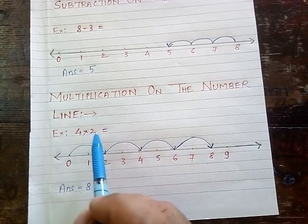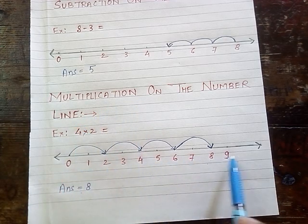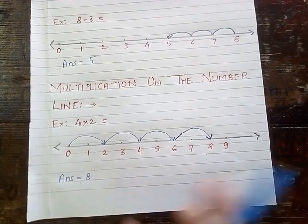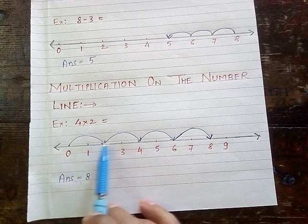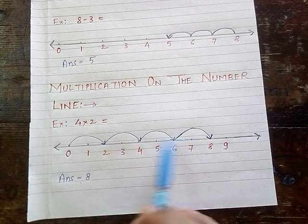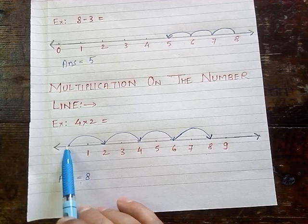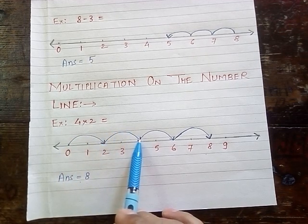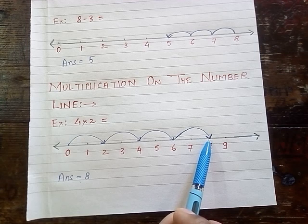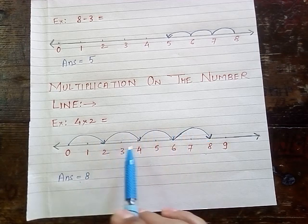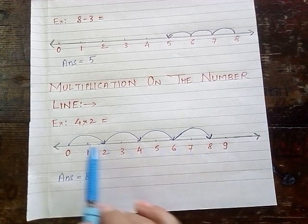Again, multiplication on the number line. For this, we will make one number line based on whole numbers. We will make 4 groups of 2 consecutive numbers, starting from 0: 0 to 2 is the 1st group, 2 to 4 is the 2nd group, 4 to 6 is the 3rd group, and 6 to 8 is the 4th group. After making 4 groups, we will reach at the point 8. So 4 times 2 equals 8.